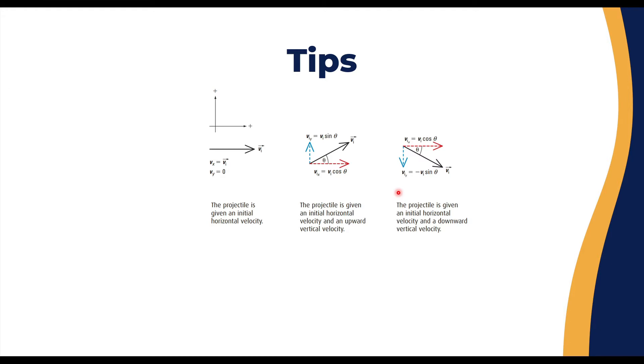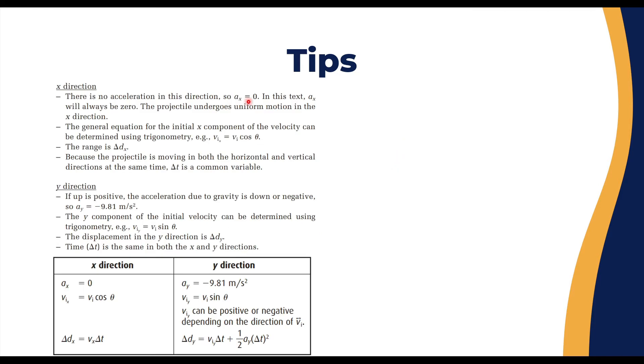On the x-axis, any motion to the right is considered positive. Any motion to the left or minus side of the x-axis is considered negative. On the y-axis, any motion to the top is positive, and any motion going downward is negative.